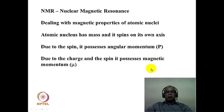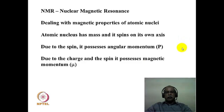Let us look at some properties of the nucleus in terms of what is useful for nuclear magnetic resonance spectroscopy. We are dealing with the magnetic properties of atomic nuclei. An atomic nucleus has both mass and spins on its own axis. Because of a spinning mass, it has angular momentum. Because of a spinning charge, it also possesses magnetic momentum. These two parameters are essential for the NMR experiment. The angular momentum is given the symbol P and the nuclear magnetic momentum the symbol μ.